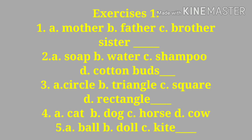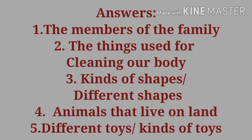Number five: ball, doll, kite. Who can tell me the first appropriate heading for number one? The appropriate heading for this is 'members of the family.' The ideas are a group of words having similar ideas that we can group under the appropriate heading 'members of the family.'